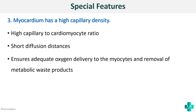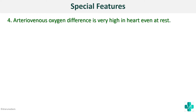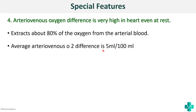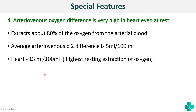The next feature is that the arteriovenous oxygen difference is very high in the heart, even at rest. About 80 percent of the oxygen from arterial blood is extracted into the heart tissue. The average arteriovenous oxygen difference in normal organs is only 5 ml per 100 ml, but in the heart it is around 13 ml per 100 ml — meaning the heart extracts a lot of oxygen as blood passes through, which helps cells receive adequate oxygen.